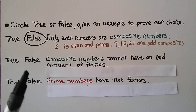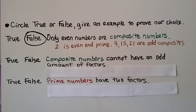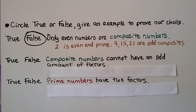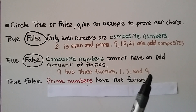True or false: composite numbers cannot have an odd amount of factors — meaning they can't have 3, 5, 7, or 9 factors. Can you think of composite numbers with only 3 or 5 factors? The answer is false. 9 is a composite number and it has exactly 3 factors: 1, 3, and 9. We only list the 3 one time, even though 3 times 3 gives us 9.